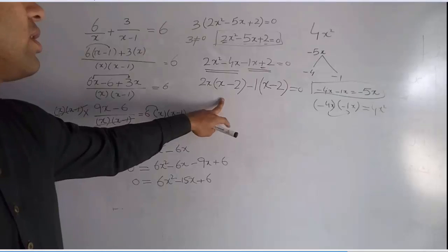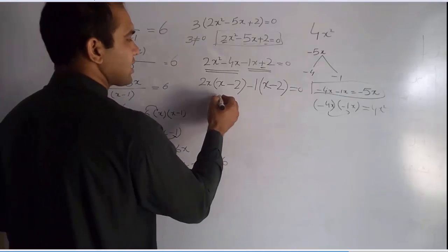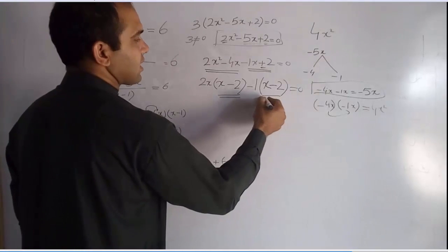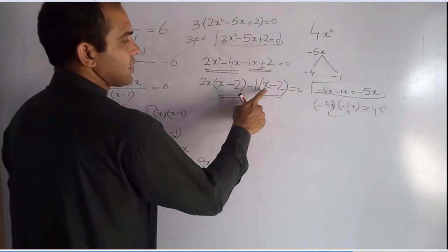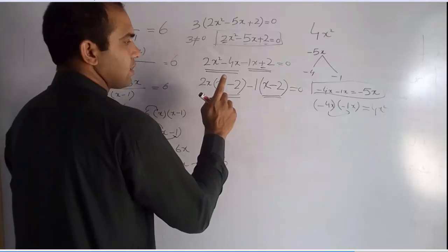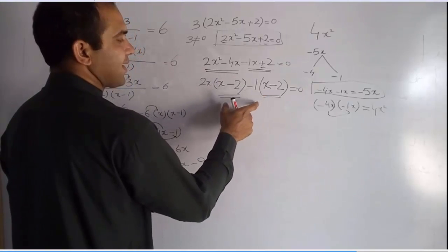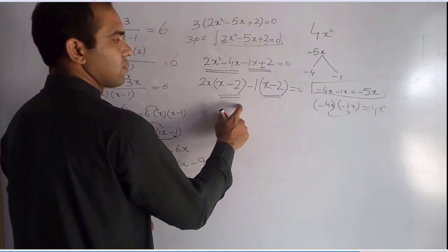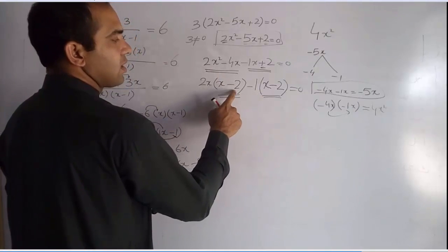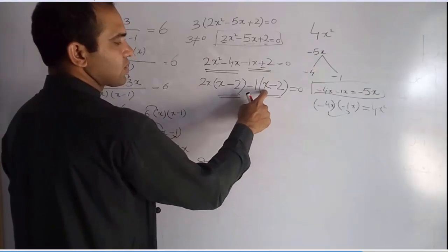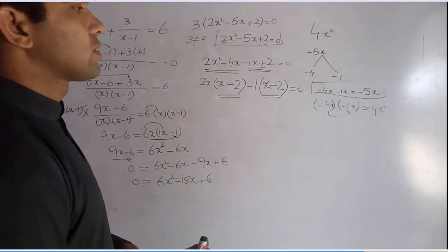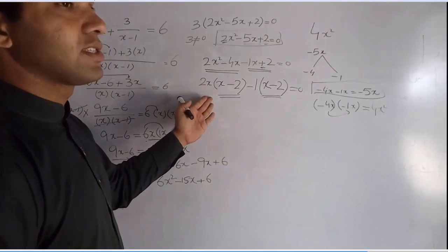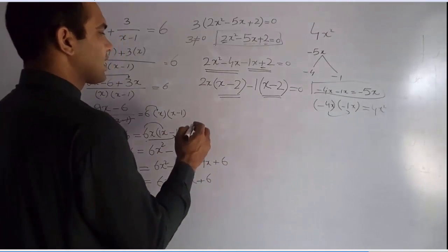Now check if our factorization is correct. Both groups give the bracket x minus 2, and x minus 2 equals x minus 2 — they are the same. So we can confidently say our factorization is correct.